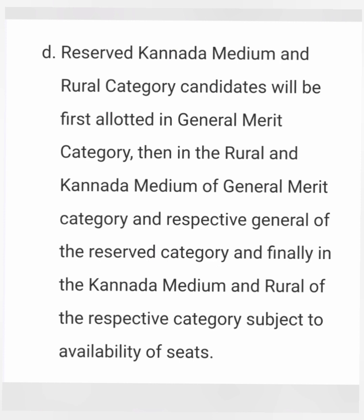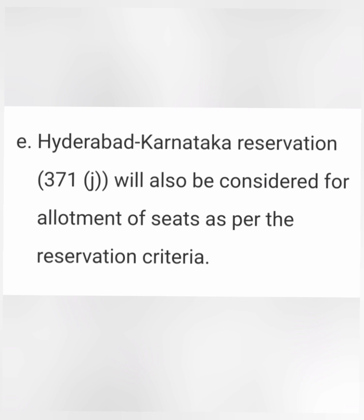Point E is for the Hyderabad-Karnataka region, also called the 371J or HKR region. HKR region students will always be allotted seats in their own HKR category — they will not be allotted seats reserved for the general merit category. This is different from other categories: you will get a seat in your own category only.